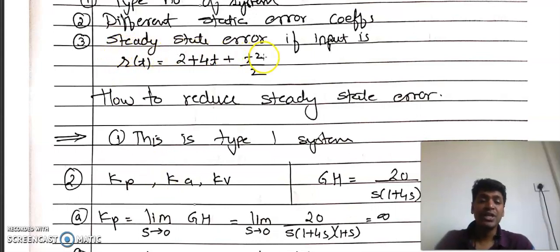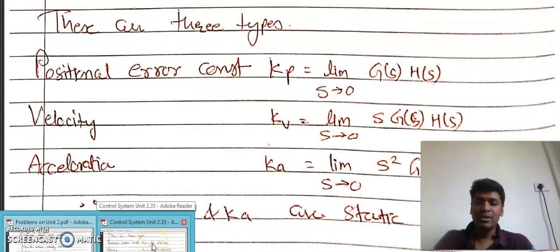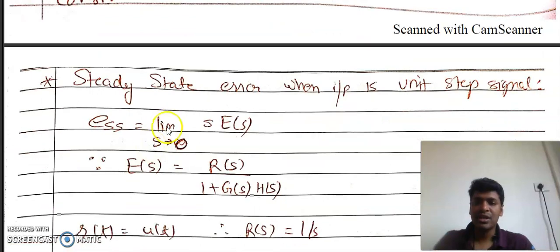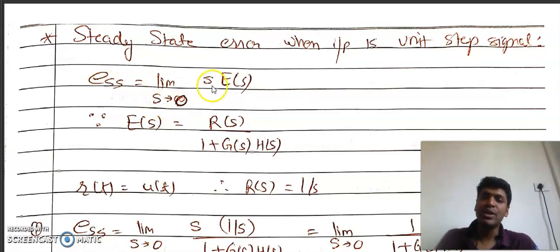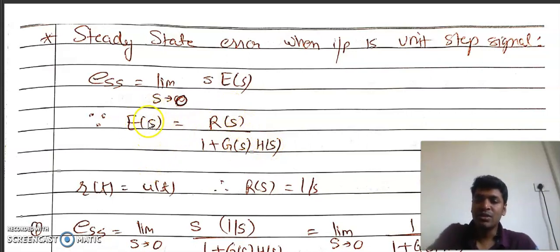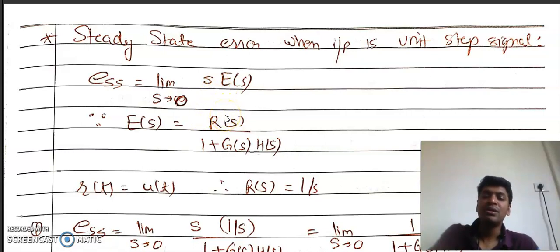Now let us deal with the third part: finding the steady state error ESS when input r(t) = 2 + 4t + t²/2. The formula for ESS is lim(s→0) s·E(s), and E(s) = R(s) / [1 + G(s)·H(s)]. So ESS = lim(s→0) s·R(s) / [1 + G·H]. We know G·H, and we know r(t), so we can find R(s) by taking the Laplace transform.